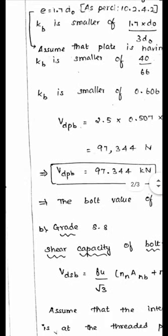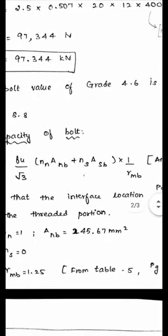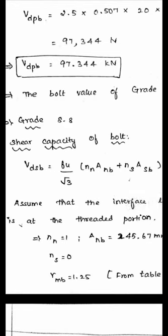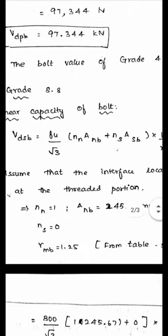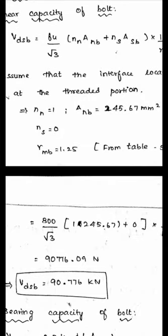Following the same procedure for grade 8.8 bolts: V_DSP = (f_u / √3) × (n_n × A_nb) × (1 / γ_mp). The only difference is f_u = 800 for grade 8.8 bolts. Number of shear planes = 1, shear plane through threaded portion, A_nb = 0.78 × (π × 20² / 4), γ_mp = 1.25. Substituting all values with f_u = 800, V_DSP = 90.776 kN.